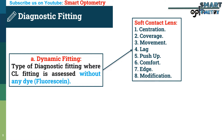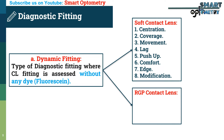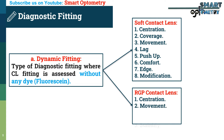In dynamic fitting of RGP (rigid gas permeable) contact lenses, we assess the following parameters: 1. Centration, 2. Movement, 3. Stability, 4. What modifications are needed to get the optimal fit.